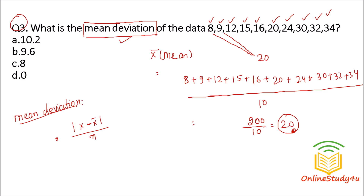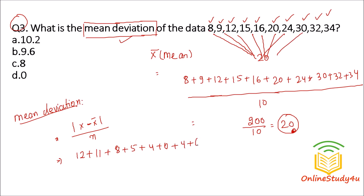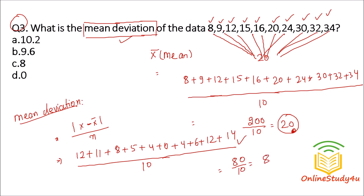The deviations from the mean of 20 are: |20-8|=12, |20-9|=11, deviation 8, deviation 5, deviation 4, deviation 0, deviation 4, deviation 6 (for 26? no — for the values listed), deviation 12, deviation 14. Since mod is used, no negative signs. The sum of deviations is 80, and 80 divided by 10 equals 8. So mean deviation is 8.